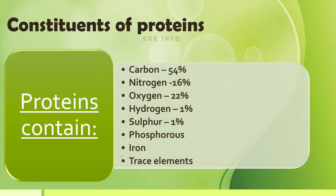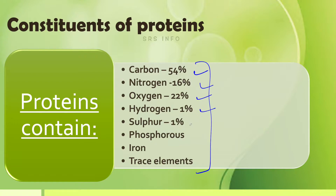What are the constituents of protein? Even though proteins are nitrogenous compounds, they contain other constituents also. The approximate percentage composition is: about 54% carbon, 16% nitrogen, 22% oxygen, 1% hydrogen, 1% phosphorus, and 1% sulfur.